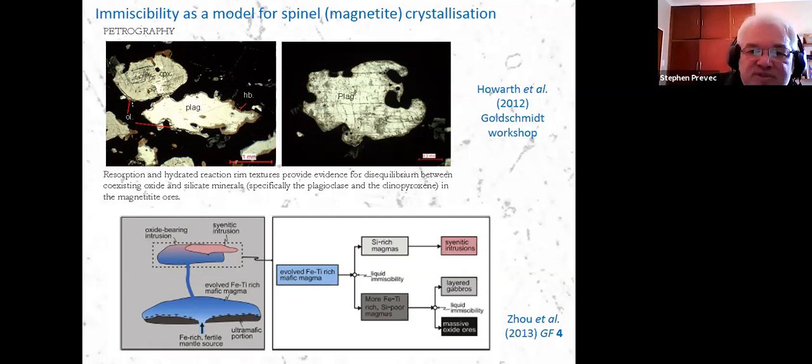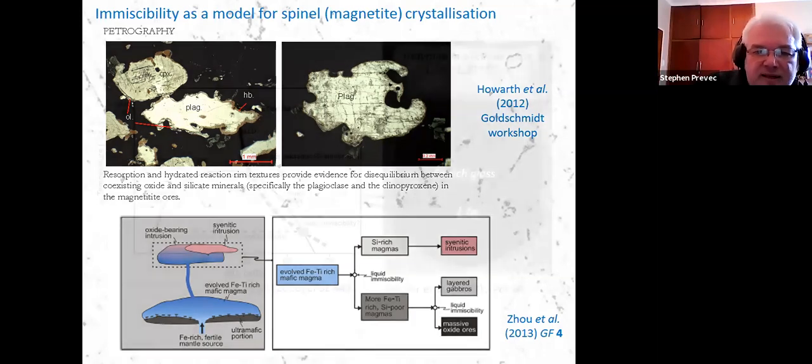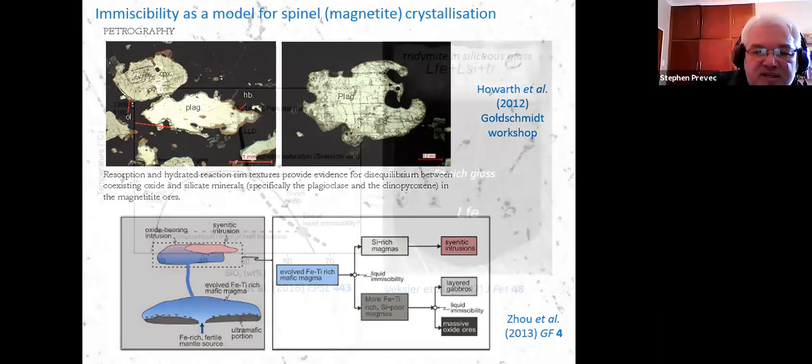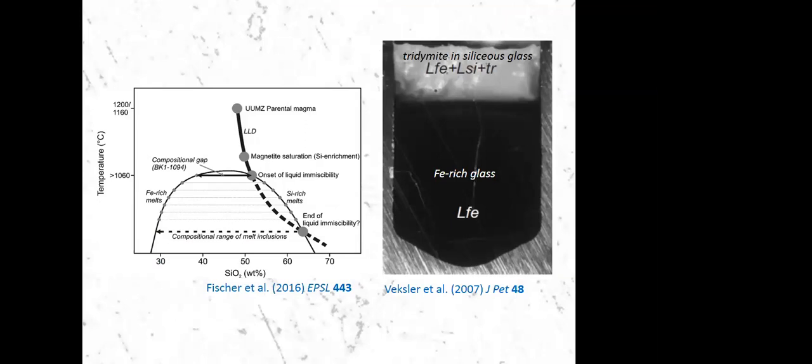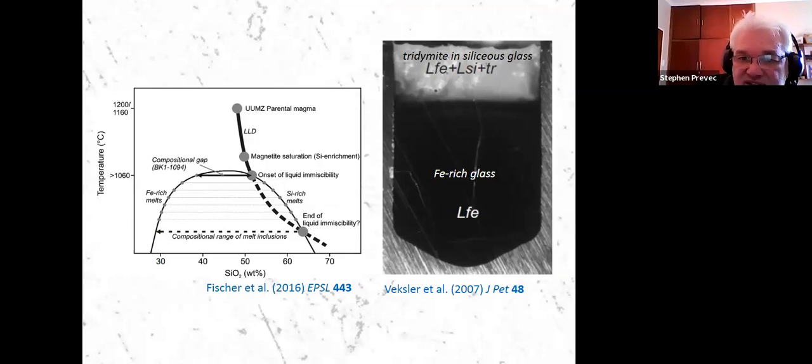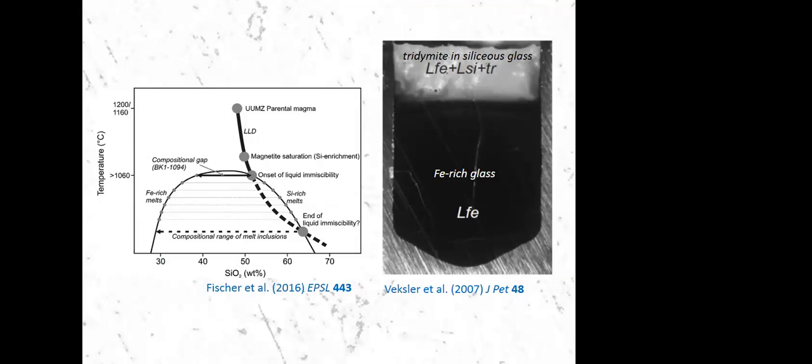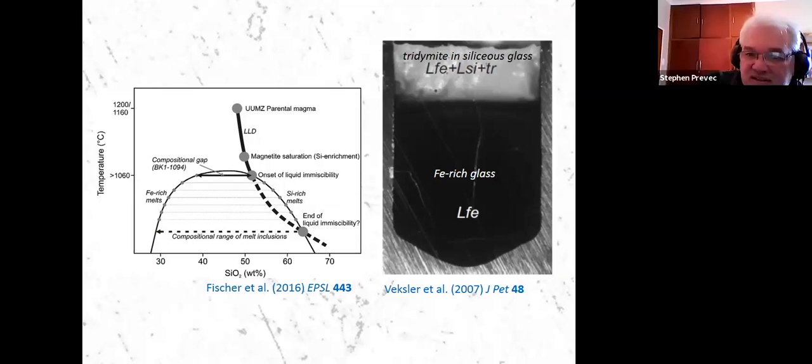So the immiscible people would interpret these as just trapped silicate liquid, which has eventually crystallized as plagioclase and clinopyroxene in these examples. And there's little reaction rims on the margins, which suggests that these are not in equilibrium with one another. Disequilibrium or immiscibility has been suggested for the Bushveld itself as well, relatively recently. Here's work by Fischer et al from 2016. And here's Ilya Veksler's example from experimental studies showing us an iron rich glass and a silicate glass preserved in the experimental charge here.